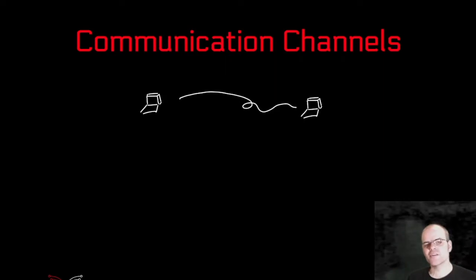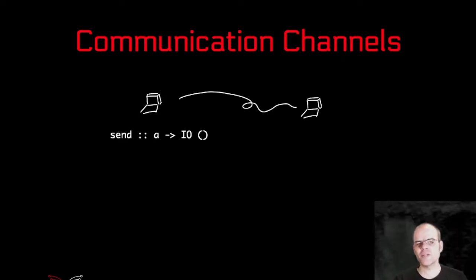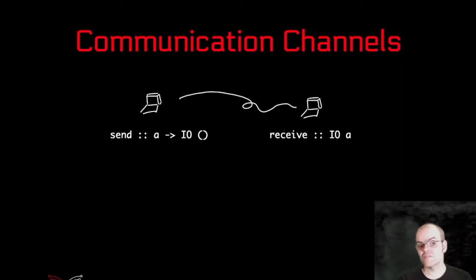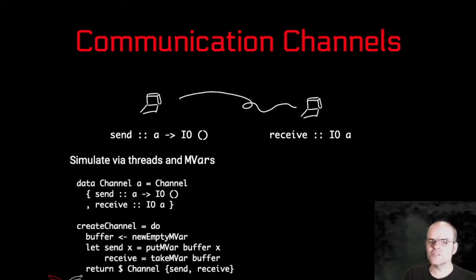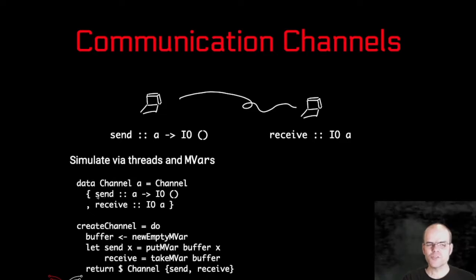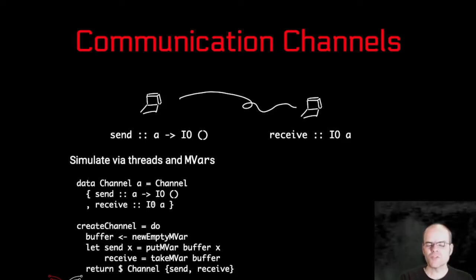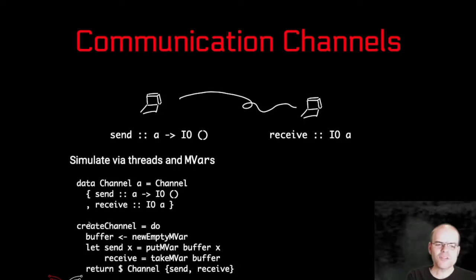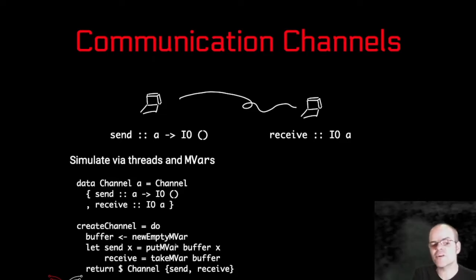For example, let's take a communication channel, a simple primitive of a distributed program: you have two computers, one of them can send some information — taking some data of type A and sending it to the other computer — and the other computer can receive it. You can simulate those just via a mutable variable. You define a channel of type A with a send function that sends some data and a receive function that collects some data. The simplest way of simulating that would be to instantiate such a channel by creating an empty mutable variable, where send puts data into the variable and receive takes it.